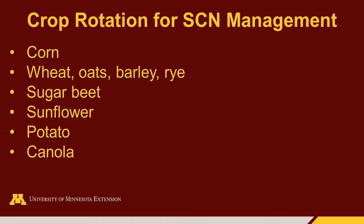SCN is managed by planting resistant varieties and rotating to crops that SCN cannot infect, like corn, any of the small grains, sunflower, potato, sugar beet, and canola.